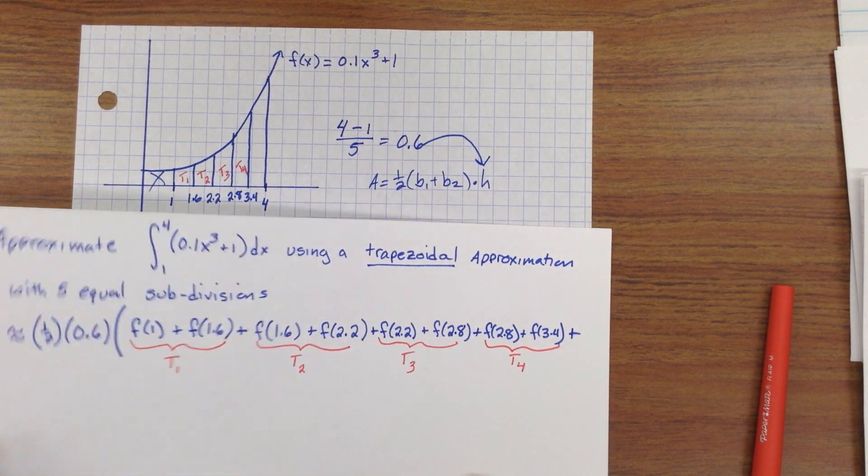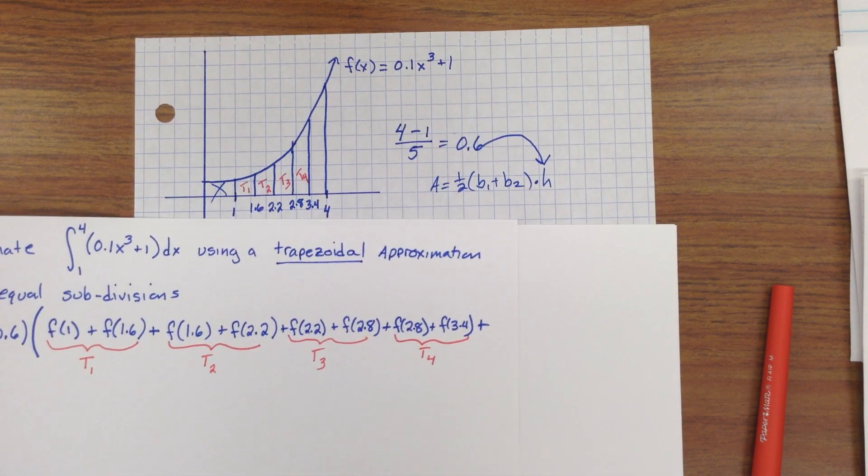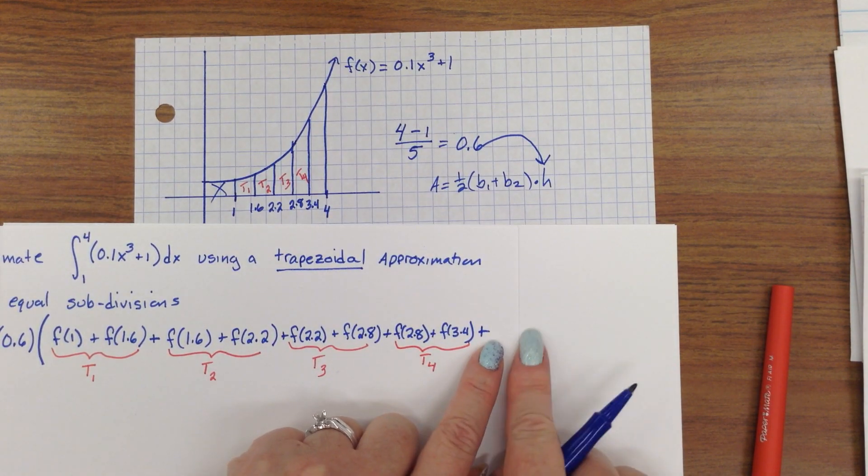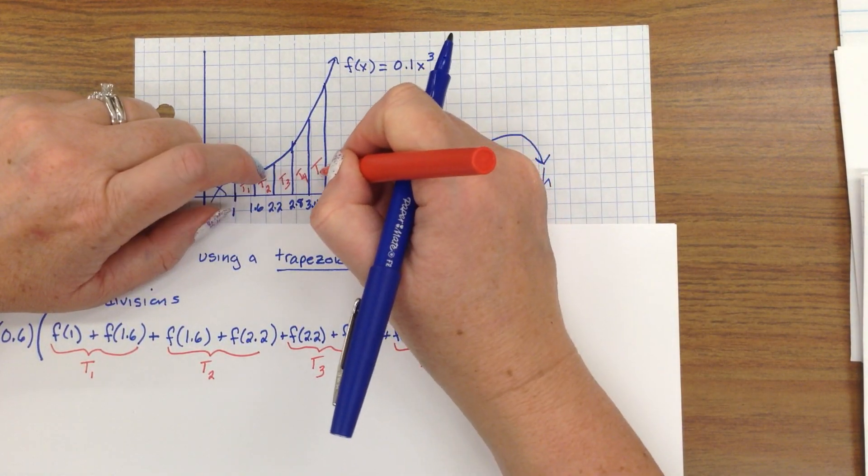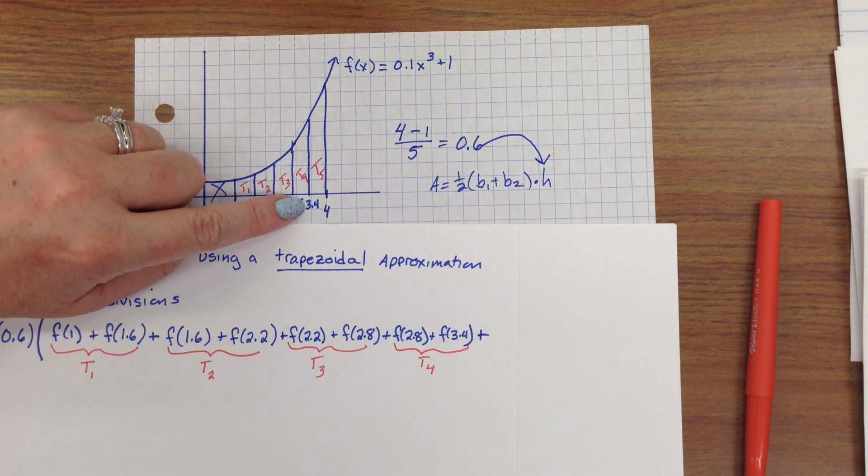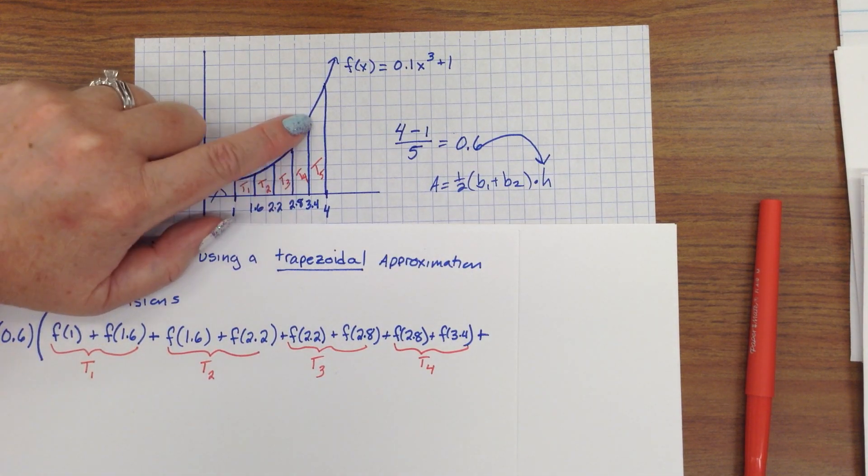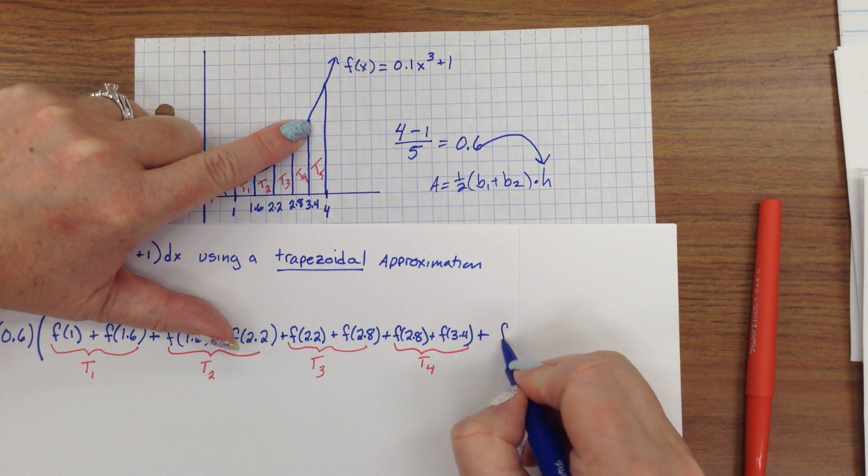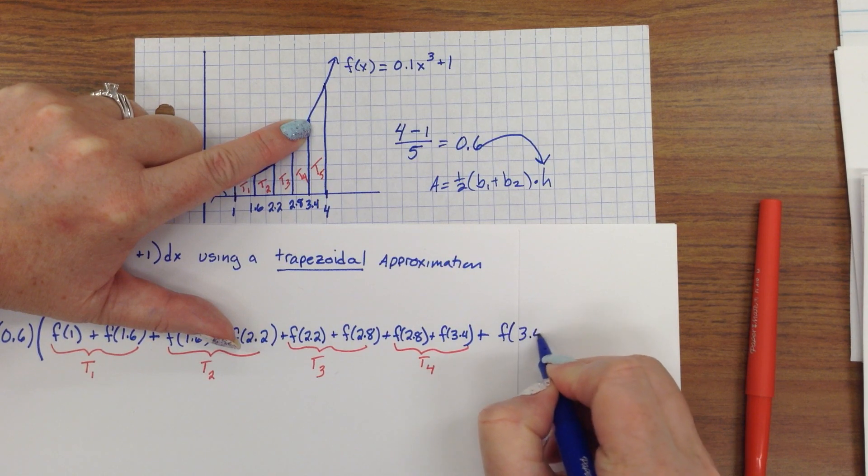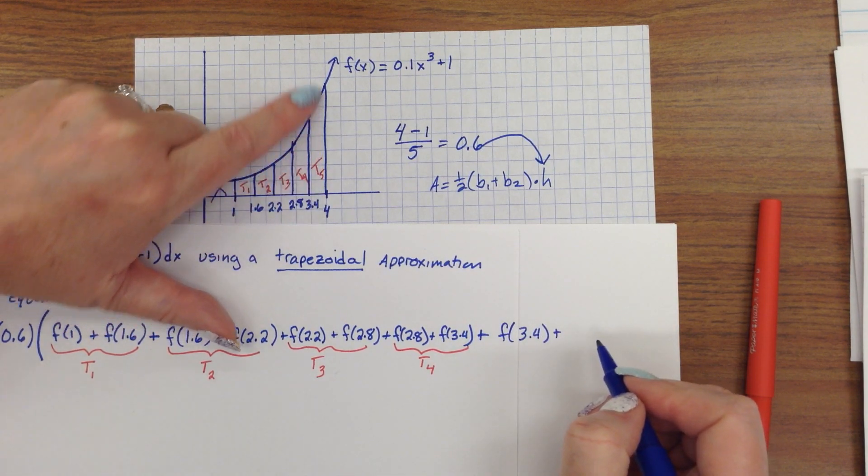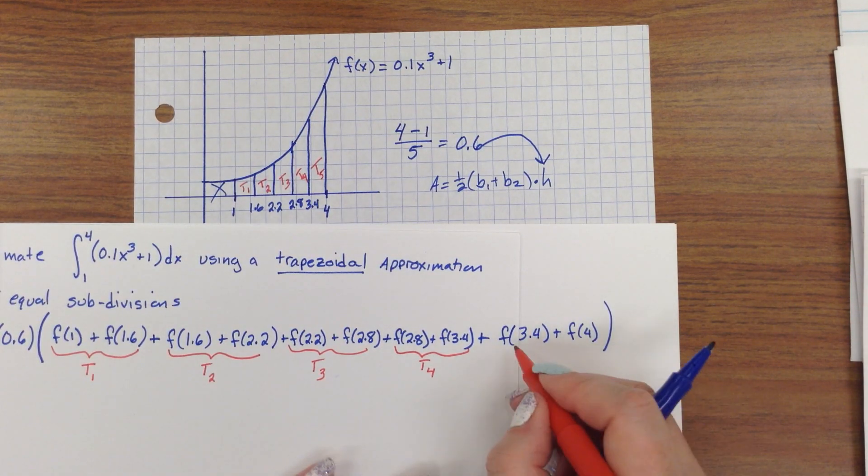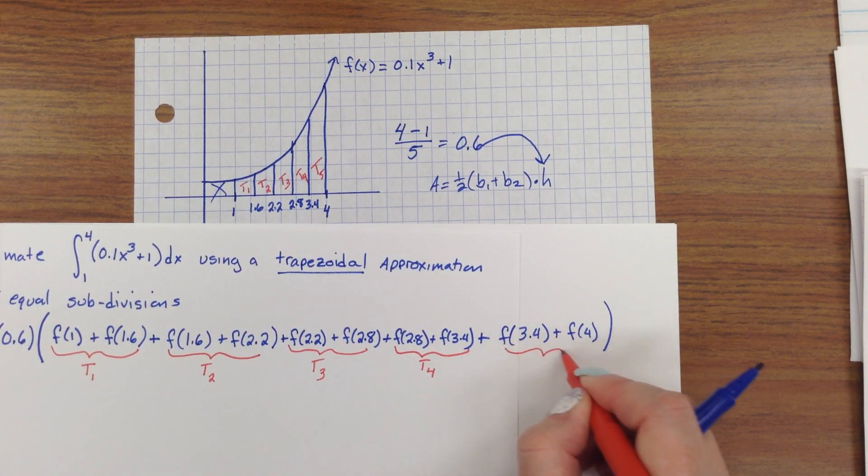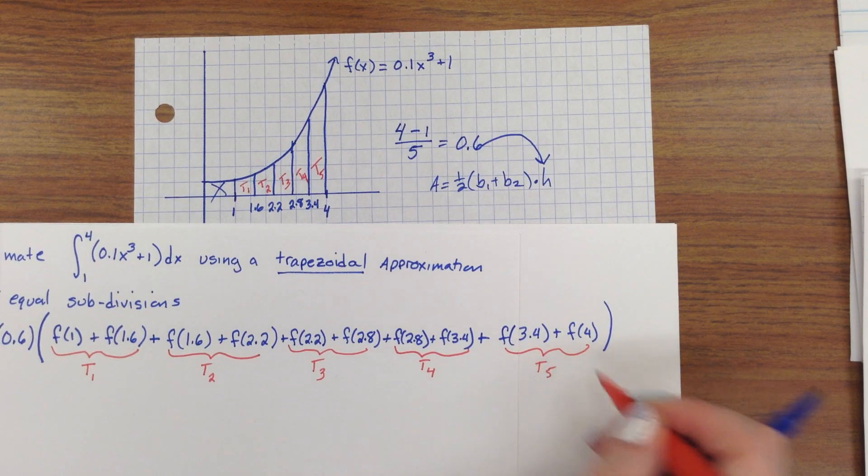Plus, here, I'll extend the paper. Plus, our fifth trapezoid. The last trapezoid, trapezoid number 5, it would be the height of the function at 3.4. Plus, the height of the function at 4. And those are the bases for trapezoid number 5.